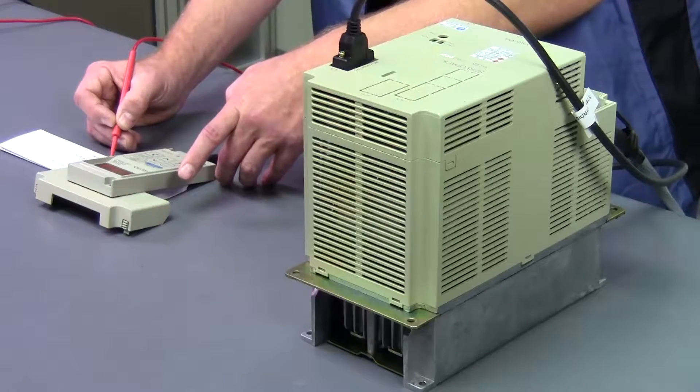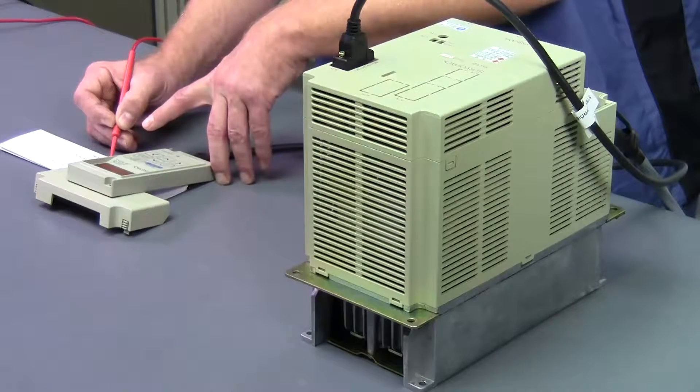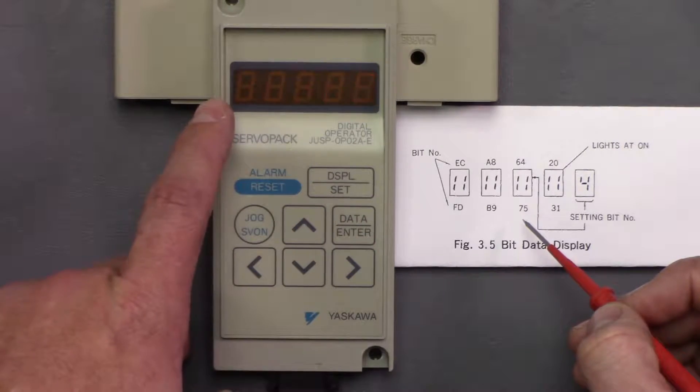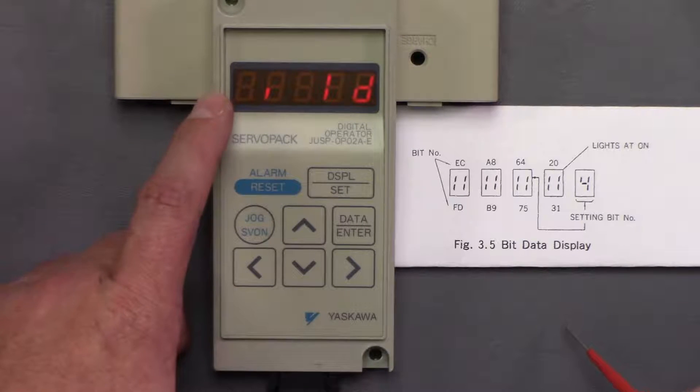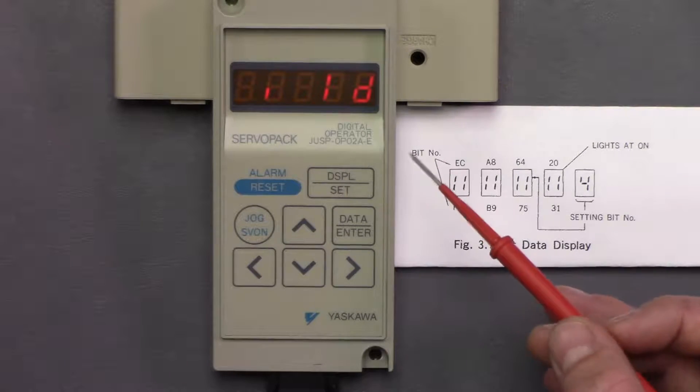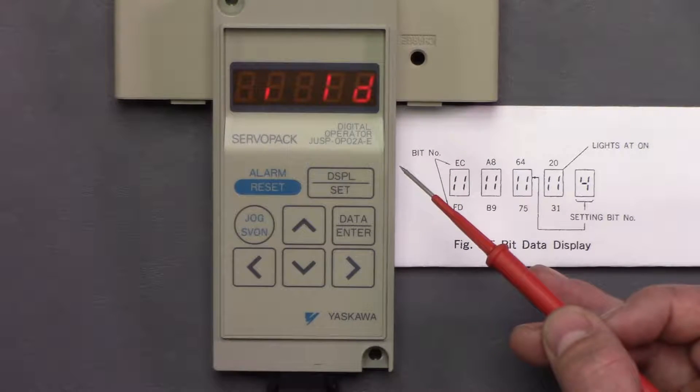Now, once you've made the required changes that you wish, you go ahead and hit data enter, and it's going to flash and say that the changes you made are accepted. Now, you're going to have to cycle the drive on and off before those changes take effect.